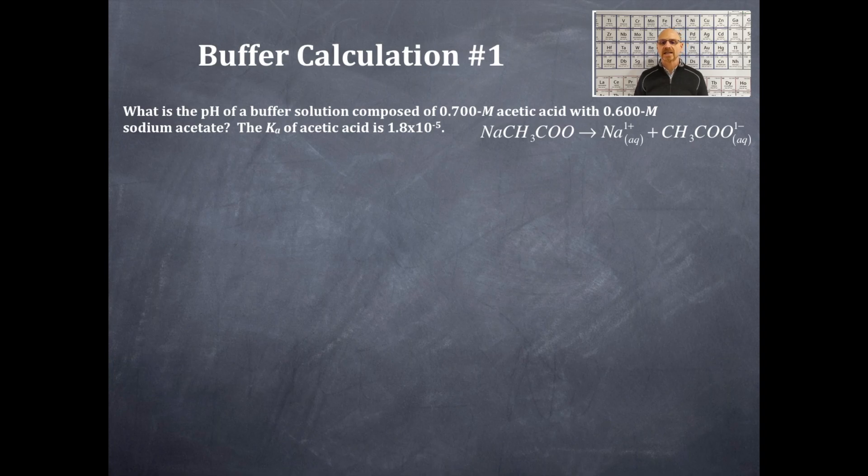Alright, so sodium acetate is a salt because it has a sodium ion in it, so it dissociates 100% like all salts do. Sodium ion plus water is neutral because sodium ion is a conjugate to a strong base. So therefore the only thing that really is important here is the acetate ion concentration. So it's a one-to-one ratio, so if I have 0.6 molar sodium acetate I have 0.6 molar acetate ion concentration. I also have 0.6 molar sodium ion concentration but of course that doesn't matter because that is neutral.